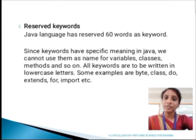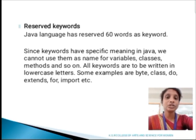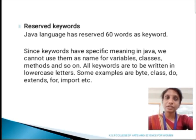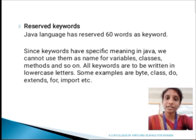A keyword has a special meaning in Java. It can't be used for naming variables, classes, methods, functions and so on. And it is written in lowercase letters. Examples: by, class, do, if, for and so on. Java has 60 words as keywords.